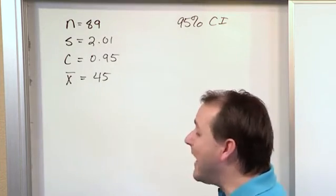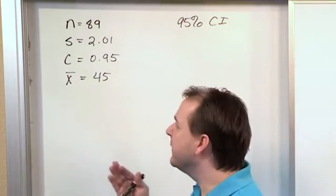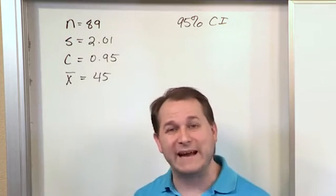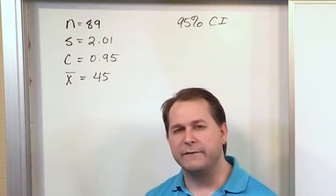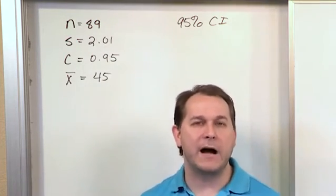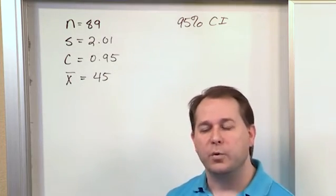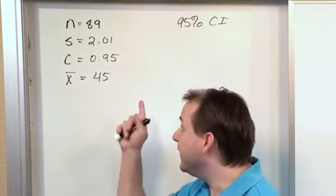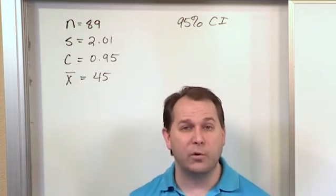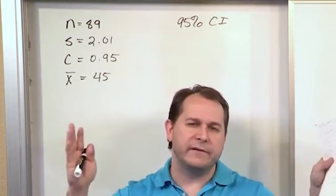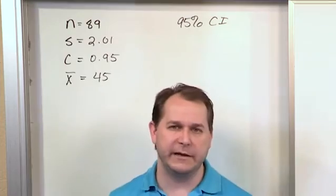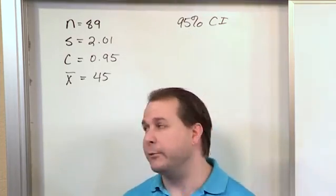We could ask them any question we want, but ultimately we're trying to find a 95% confidence interval for some data. When we're talking about confidence intervals, in this case we're talking about the population mean. So we're taking a small subset of the population, 89 people in this case, and we're asking them a question. We're trying to, from that, calculate a confidence interval that would contain the population mean.